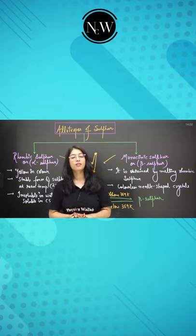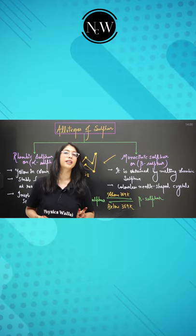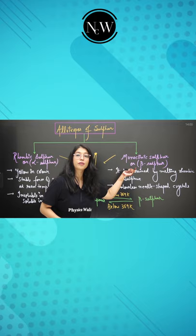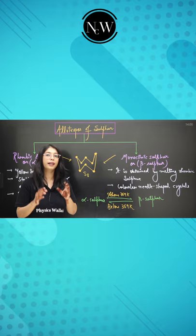Hello everyone, today we will discuss allotropes of sulfur. Sulfur has two types of crystalline allotropes: rhombic sulfur, which is alpha sulfur, and monoclinic sulfur, which is beta sulfur. Both molecules have the shape of S8, which is a puckered crown ring structure.